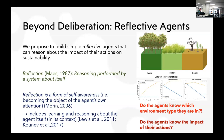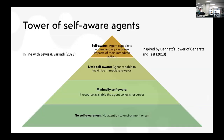The question is: do reflective agents know which environment type they are in, and do they know what the impact of their actions would be? The tower of self-aware agents ranges from no self-awareness — no attention to environment or self — to minimal self-awareness, where the agent understands that resource is available; to partial self-awareness, where the agent can maximize immediate rewards; to the highest order — maximum self-awareness — where the agent is able to understand the long-term impacts of its actions.